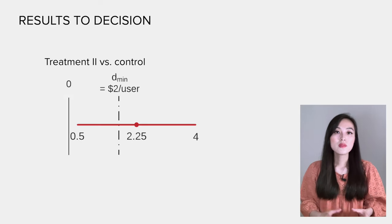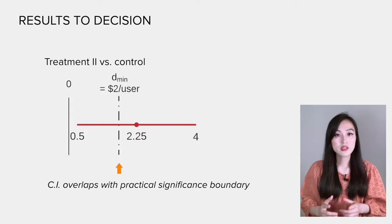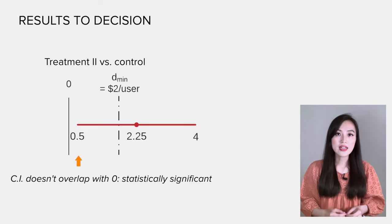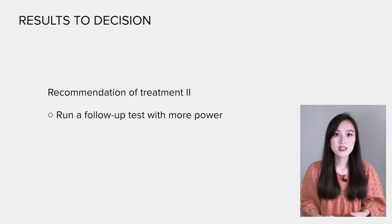The comparison between treatment 2 and control is also interesting. The confidence interval overlaps with the practical significance boundary — while the result is statistically significant, it's possible the change is not practically significant. We also recommend running a follow-up test to make the final decision. Alright, this concludes the end-to-end example. Hopefully, through this example, you have a better understanding of the decisions that need to be made in an online control experiment. In the next video, we'll dive into some interesting topics about experiment design. Stay tuned — I'll see you soon.